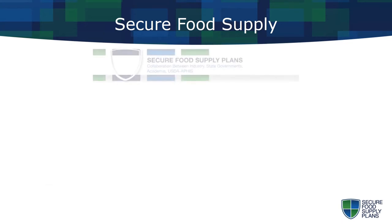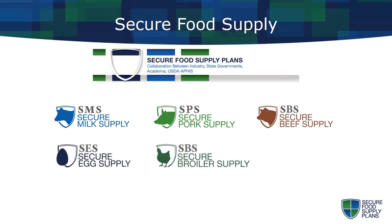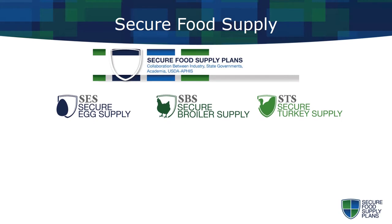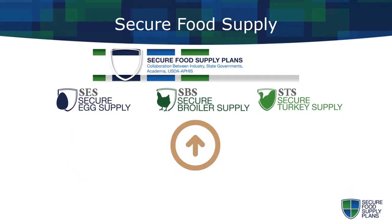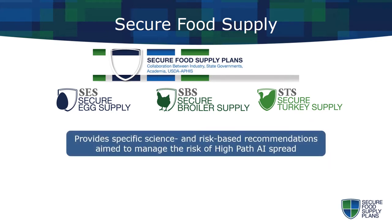An equally important resource for poultry producers interested in implementing effective prevention programs is the Secure Food Supply Program, a voluntary public, private, and academic partnership. The program promotes business continuity in the face of a foreign animal disease outbreak, such as foot-and-mouth disease in cattle and avian influenza in poultry. The three component programs of interest to poultry producers are the Secure Egg Supply Plan, the Secure Broiler Supply Plan, and the Secure Turkey Supply Plan. Each plan provides specific science and risk-based recommendations aimed to manage the risk of high-path AI spread and provide confidence that egg industry products moved into the market do not contain the virus.